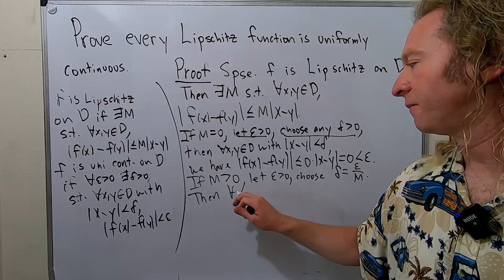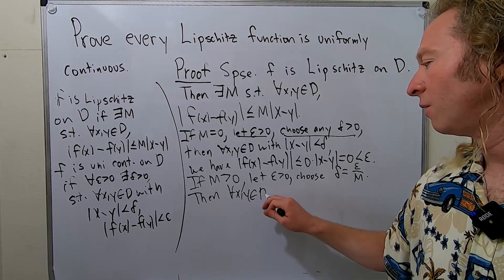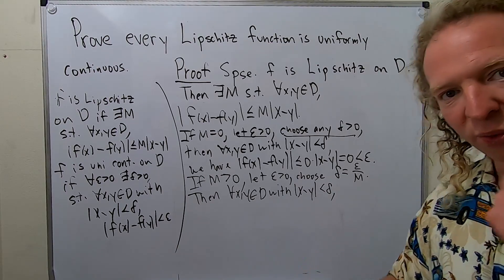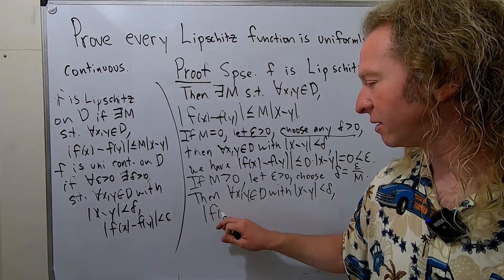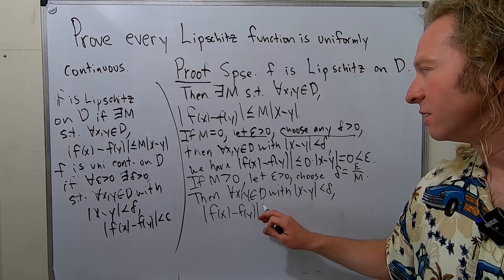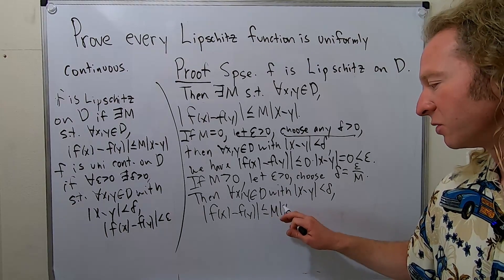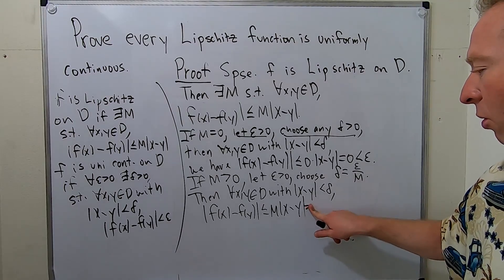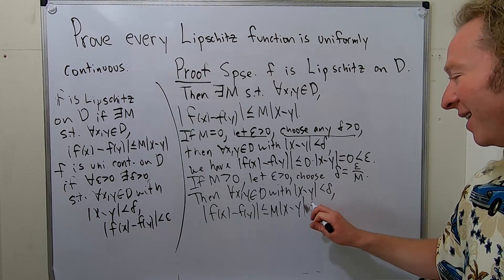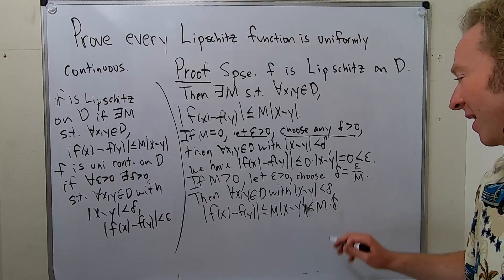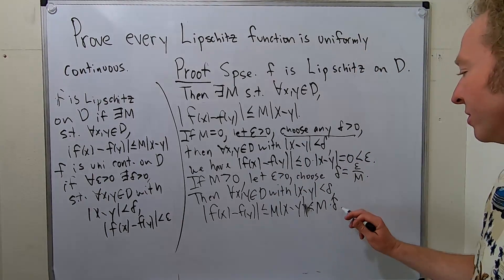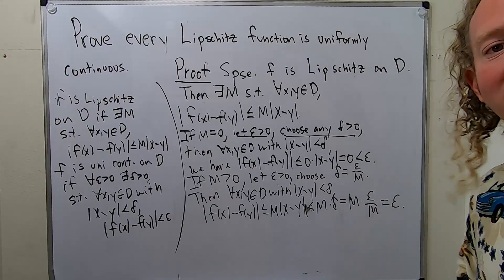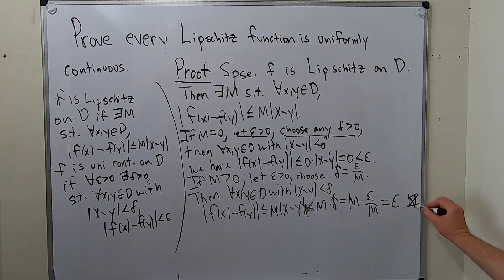Then for all x, y in D with |x - y| less than delta, we have |f(x) - f(y)| ≤ M|x - y|, by the Lipschitz condition. This is less than M times delta. Since delta is epsilon over M, this equals M times epsilon over M, which equals epsilon. And that completes the proof.